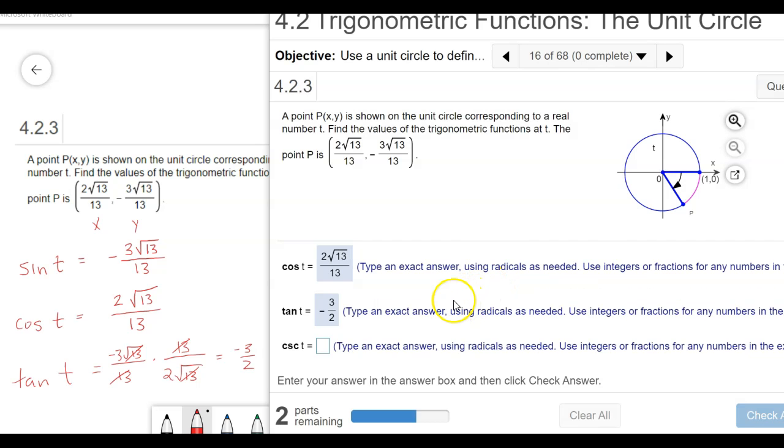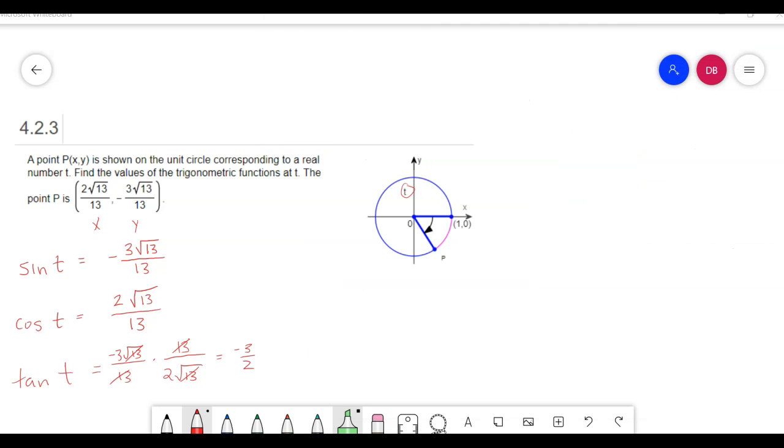Now they want the cosecant. The way this is going to go from here is they're going to ask for the reciprocals of these. Remember, cosecant is the reciprocal of sine, secant is the reciprocal of cosine, and cotangent is the reciprocal of tangent. If I flip over the sine function, I'll get cosecant. Initially, I'm going to get negative 13 over 3 square root of 13.